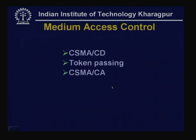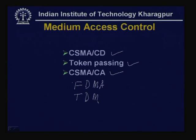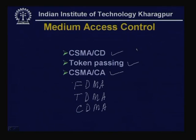There is a close relationship between topology and transmission media. For bus topology, coaxial cable is the most suitable medium. For ring topology, it is possible to use twisted pair, optical fiber, or coaxial cable if necessary. For star topology, twisted pair and optical fiber are the most commonly used media. The most popular medium access control techniques used are CSMA/CD and token passing, though FDMA and TDMA are also used in other scenarios.